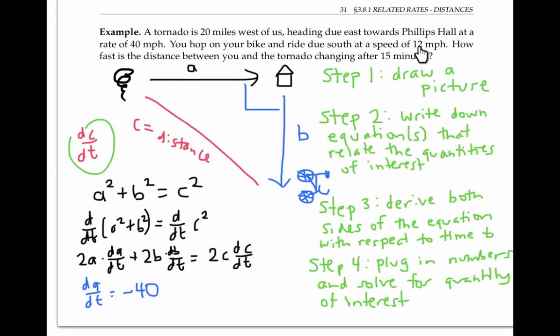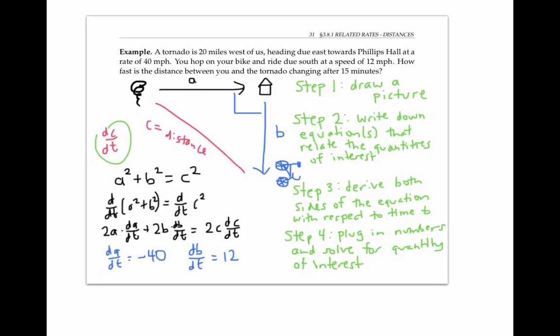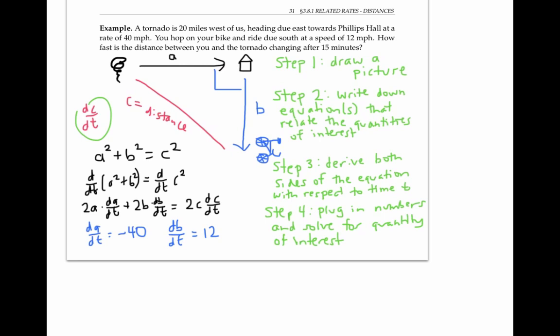Since the bicycle is moving at 12 miles per hour, the distance between Phillips Hall and the bicycle is increasing at a rate of 12 miles per hour. So db/dt is positive 12. The quantities a, b, and c are constantly changing. But at the time of interest, t equals 15 minutes, or in hours 0.25 hours, we can figure out what a, b, and c are.